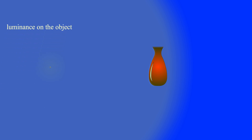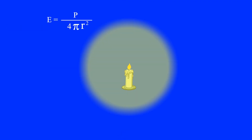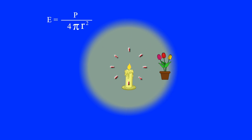If an object is illuminated by a point source, the illuminance on the object equals the luminous flux of the light source divided by the surface area of a sphere whose radius equals the distance of the object from the light source. It is worth noting that the luminous flux of the light source is distributed in all directions, so only a small portion of light is available to illuminate the object. This equation is only true if the light emitted falls perpendicular to the surface being illuminated.